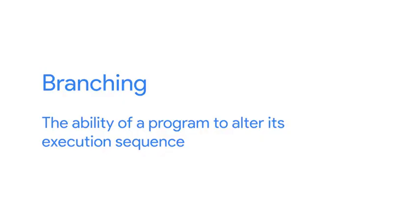Now that we're armed with knowledge of Python's expressions, comparators, and variables, we can dive right into how to use them in our scripts to perform different actions based on their values. The ability of a program to alter its execution sequence is called branching, and it's a key component in making your scripts useful.